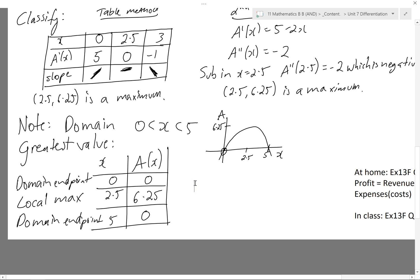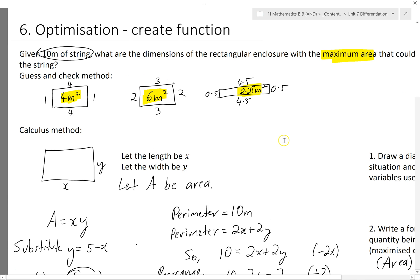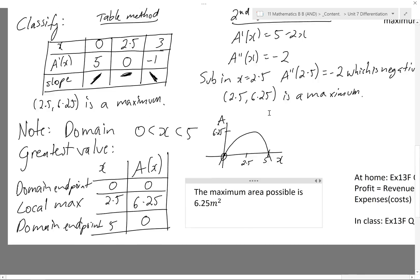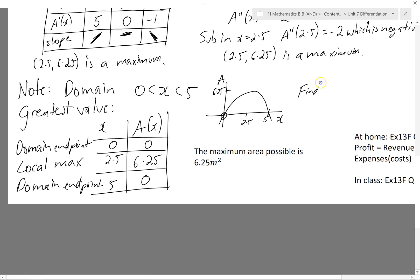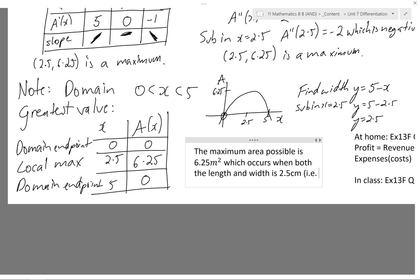So in the end, in conclusion, I can write the maximum area possible is 6.25 meters squared. I'll look back and see if I've actually answered the question. It says, what are the dimensions? So I need to find the width as well. Thankfully, up here, I have an equation for the width. So if I want to now find the width, I've got y equals 5 minus x. I know my optimum length is 2.5, so I'll sub in x equals 2.5, get y equals 5 minus 2.5, or y equals 2.5. So my maximum area possible is 6.25, which occurs when both the length and width is 2.5 centimeters, i.e. that is a square.